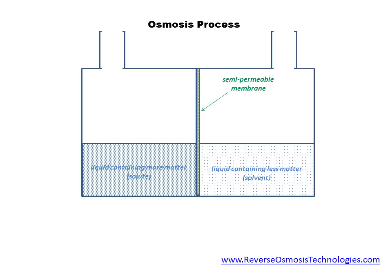This slide depicts a container separated into two compartments by a semi-permeable membrane. The membrane is sealed so water can only flow through the membrane and not around it. Water containing two different concentrations of matter is represented by two shaded areas inside the container, where the darker shading represents the water containing a higher concentration of matter, or the solute.